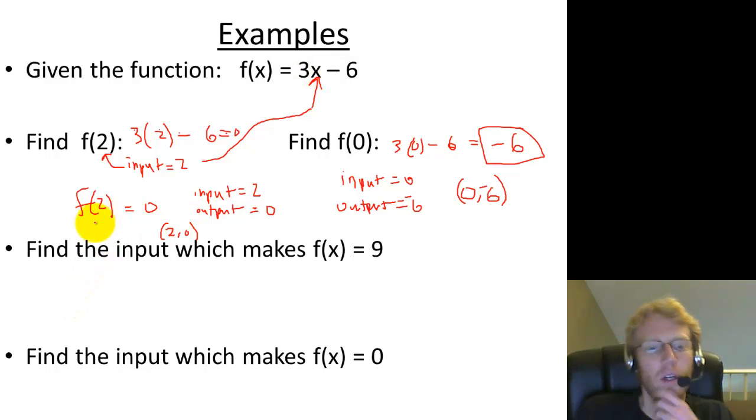Okay, now let's work backwards. What input makes the output, remember f of x is the output, now we want the output to be equal to 9. Okay, so where do I plug this 9 in? Do I plug it in for x? No, because x is the input, right? Do I plug it in for f of x? Yes. So f of x is the output, and you can see f of x equals 9. So I'm going to put this 9 right here.